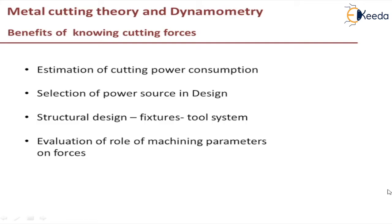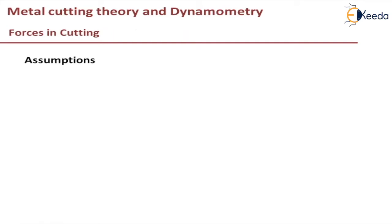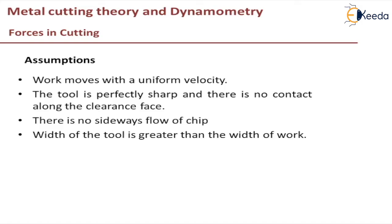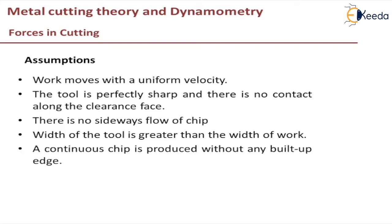To do this we make certain assumptions. Like, work moves with a uniform velocity, though actually it may not be so. The tool is perfectly sharp and there is no contact along the clearance face. There is no sideways flow of chip. Width of the tool is greater than the width of the work. A continuous chip is produced without any built-up edge, though actually there may be a built-up edge and cutting forces may vary.